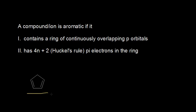Here we have the cyclopentadiene molecule. Let's analyze it to see if it fits the criteria to be aromatic. We're going to start with the first criteria: does it contain a ring of continuously overlapping p orbitals? If we analyze these carbons, the double-bonded carbons are sp2 hybridized and therefore have a free p orbital. Those four carbons are sp2 hybridized. However, this other carbon is sp3 hybridized.